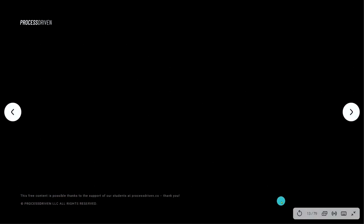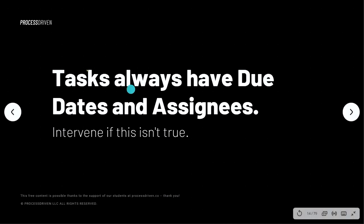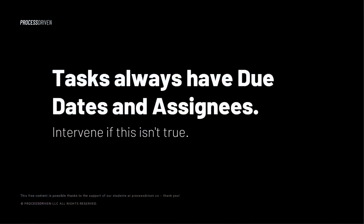Rule number four: make sure your tasks always have due dates and assignees. This one came up recently on a consulting call. Someone said, "We started giving everything in our ClickUp account a due date and an assignee, and it's become utter chaos." The reason it became chaos is because they put assignees and due dates on everything — every row in ClickUp, no matter what it represented. I have to reference back to rule one: not every idea is a task. This rule is referring to lowercase tasks — things you need to do — and those must have an assignee and a due date. That does not mean your ideas should have an assignee and a due date.